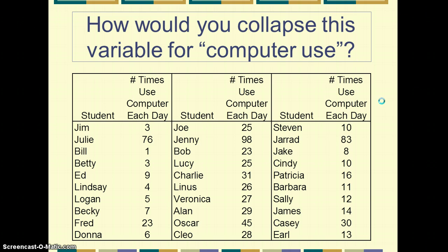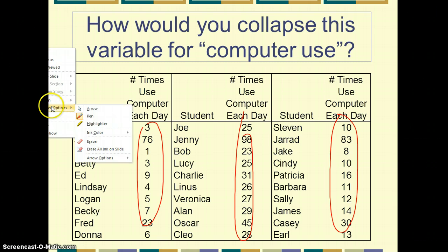So let's take a look at this variable and its values. This is the data. We have the students' names. We have the number of times they use the computer each day. This is probably a response to a survey question or I suppose someone could have watched them all day and observed and counted it. If we wanted to collapse this variable for computer use and we're collapsing the values into categories, how do we collapse this into categories that makes sense?